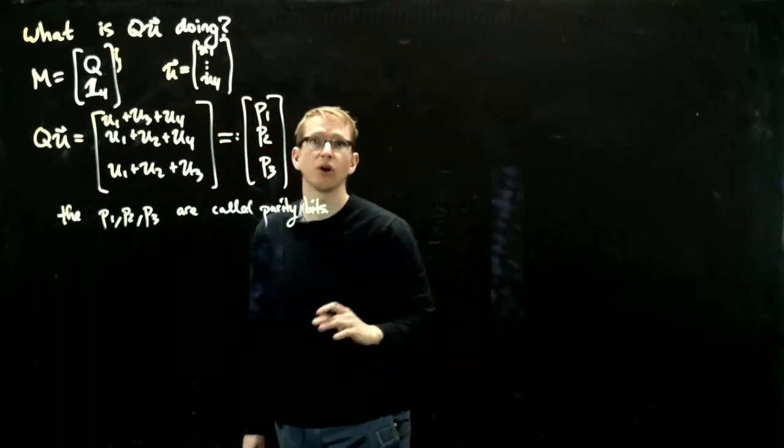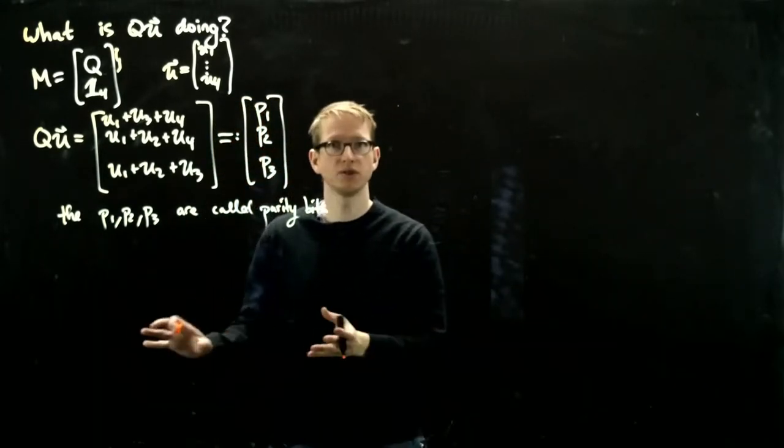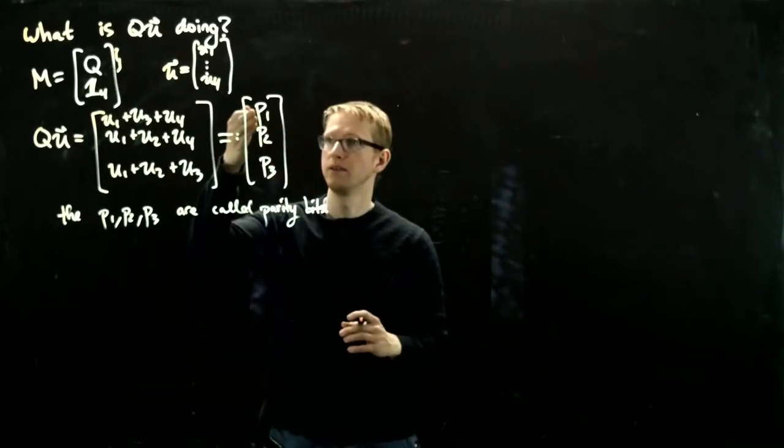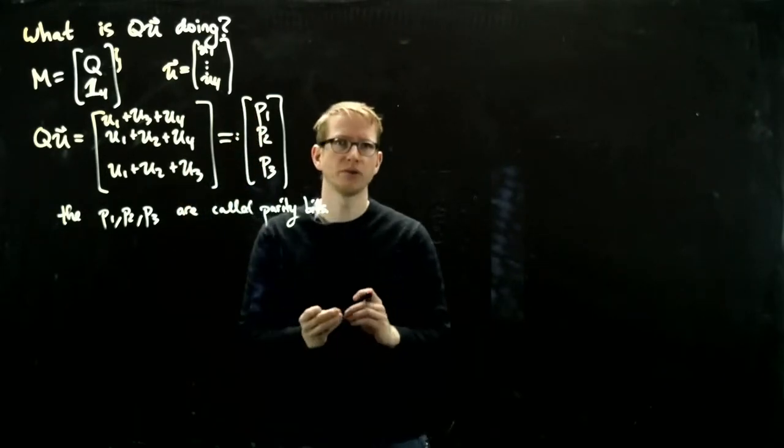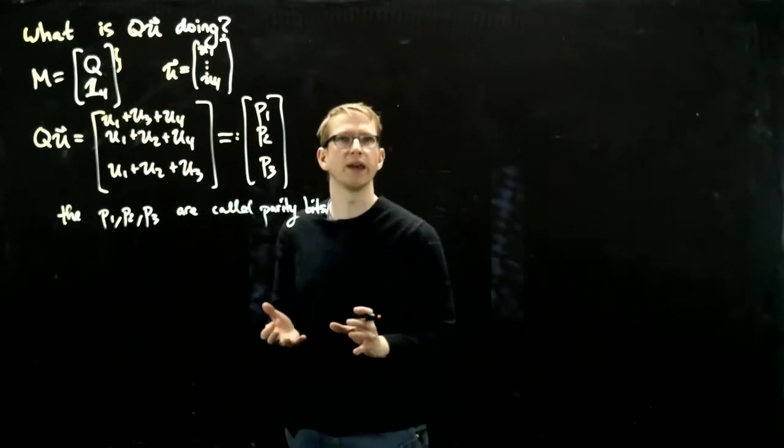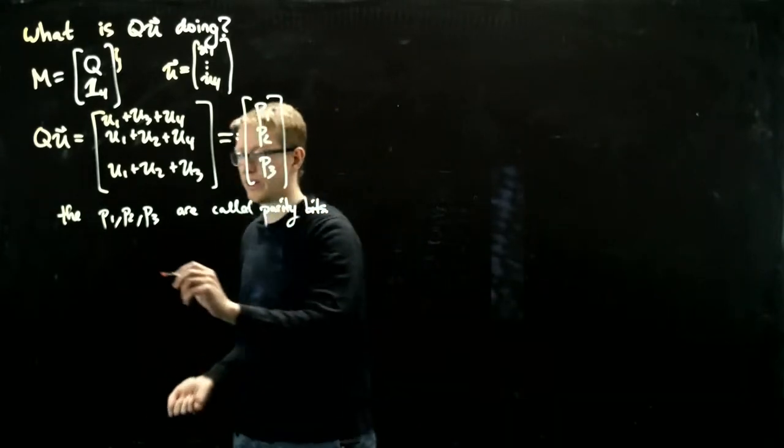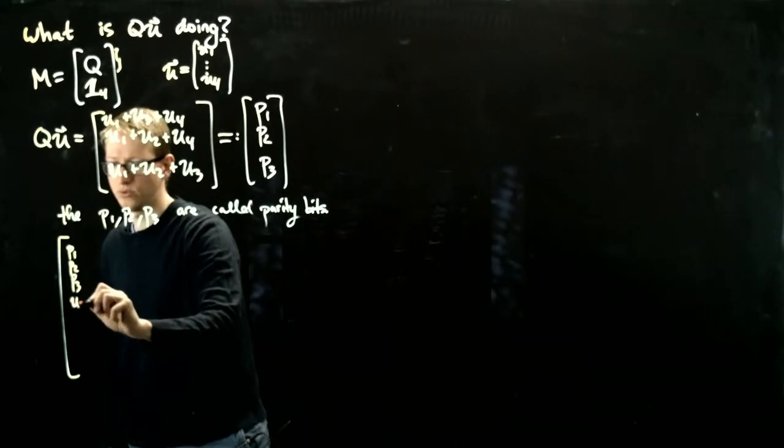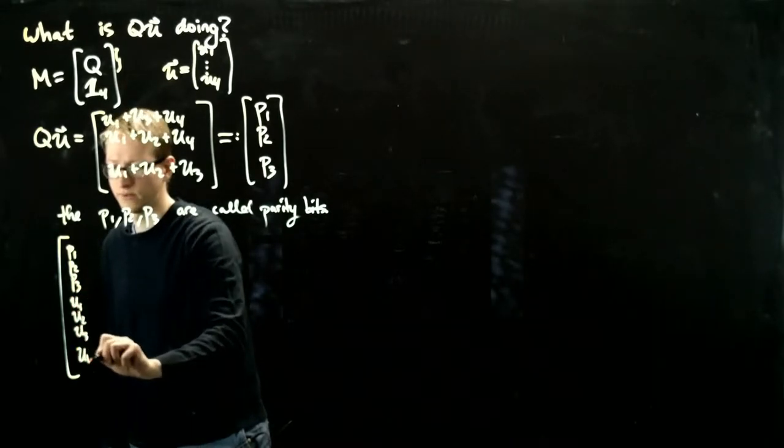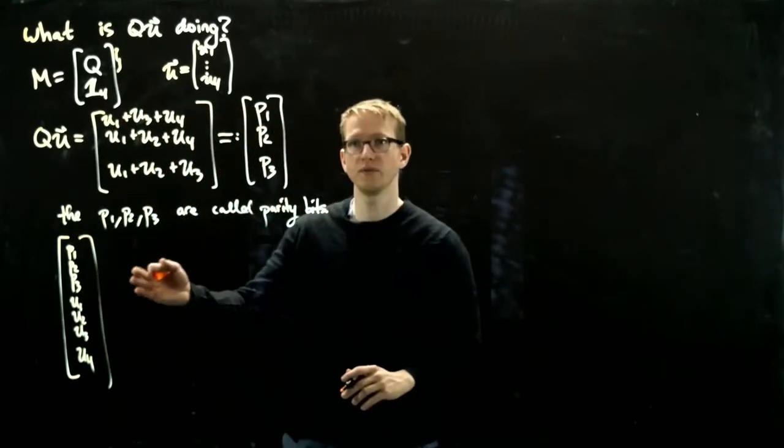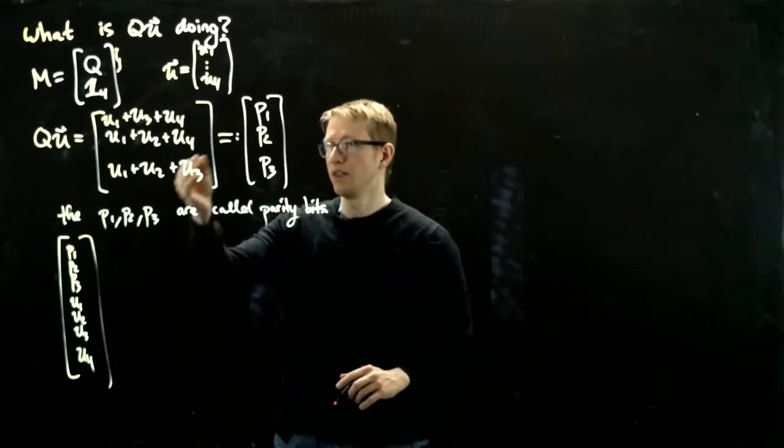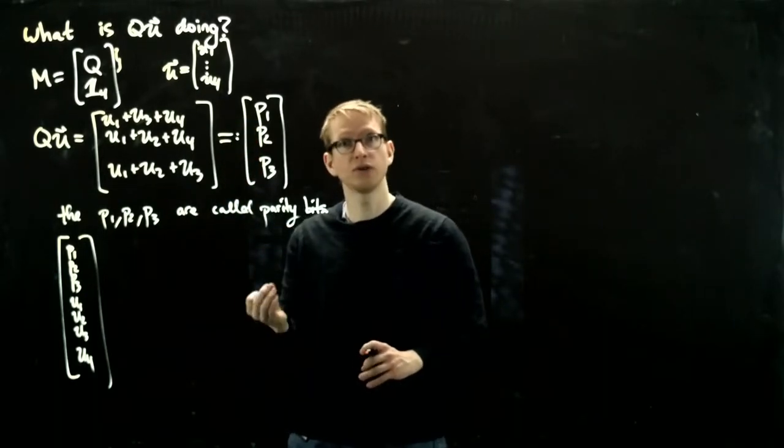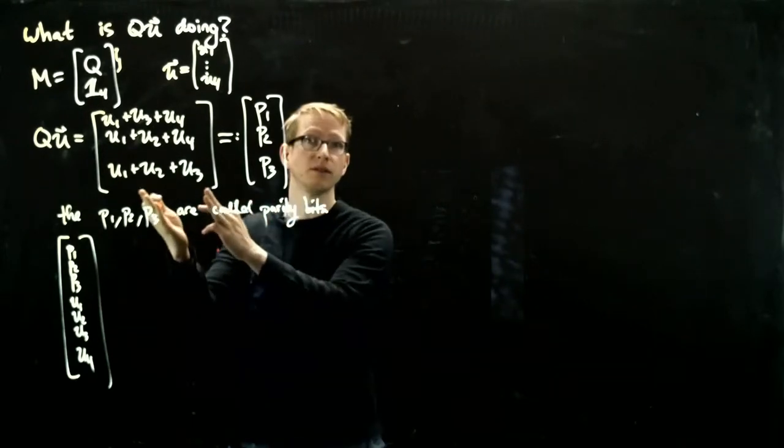The reason they're called parity bits is because when this message gets sent across a channel, if an error occurs, these entries are summing up the entries of the vector u in some specific way. If an error occurred, we have some vector p1, p2, p3, and then u1, u2, u3, u4. If an error occurred in one of these entries, then these parity bits will detect if an error occurred and where the error occurred based on the consistency of this formula.